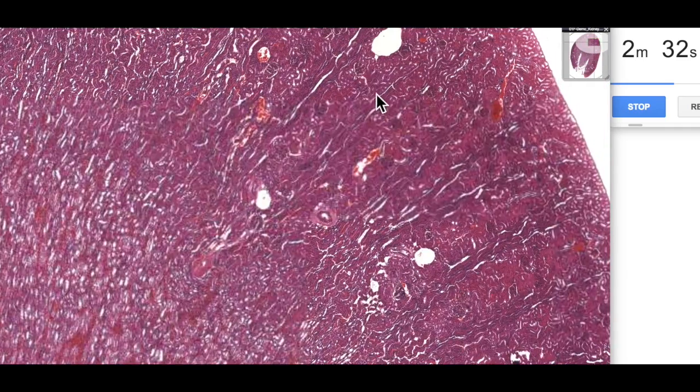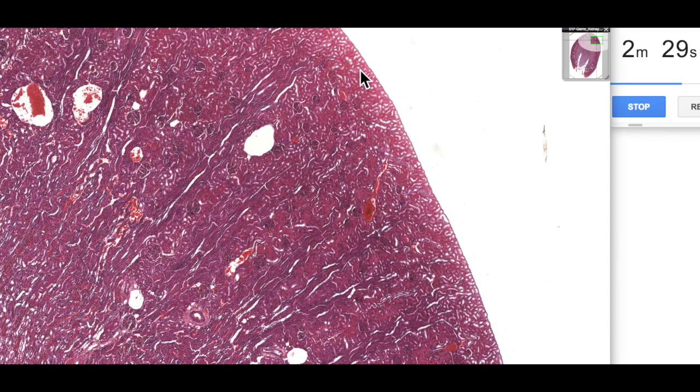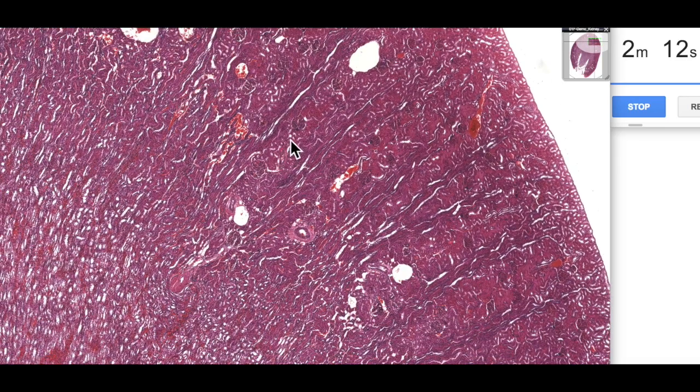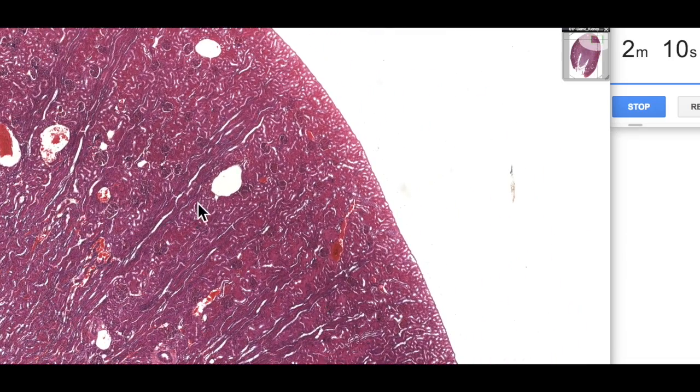But what we're going to be focusing on is the cortex, the cortical tissue here. And we can see just even at this low magnification the cortex is divided into sort of bands. We've got these stripy regions within the cortex and these are referred to as the medullary rays.